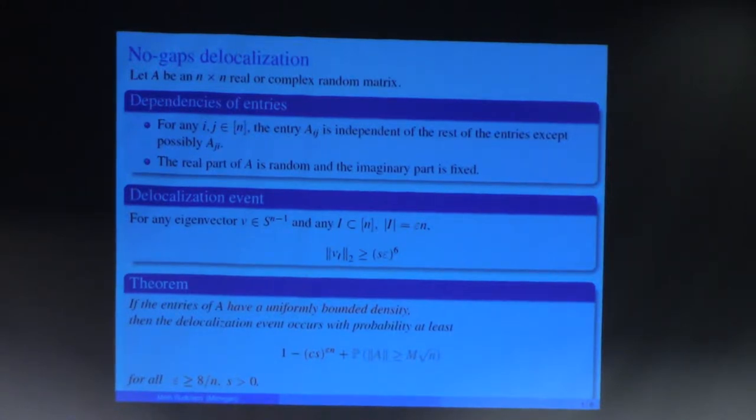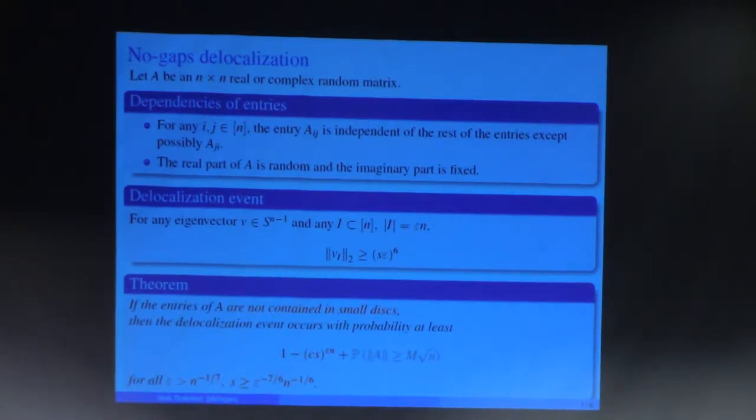We are going to use it for random graphs, so I'm going to cheat. I proved the theorem under the bounded density assumption, and I'm going to use it without bounded density assumption. I'm going to use a more general result, which I didn't prove, but it can be proved using the same ideas, although the proof is some five times longer.